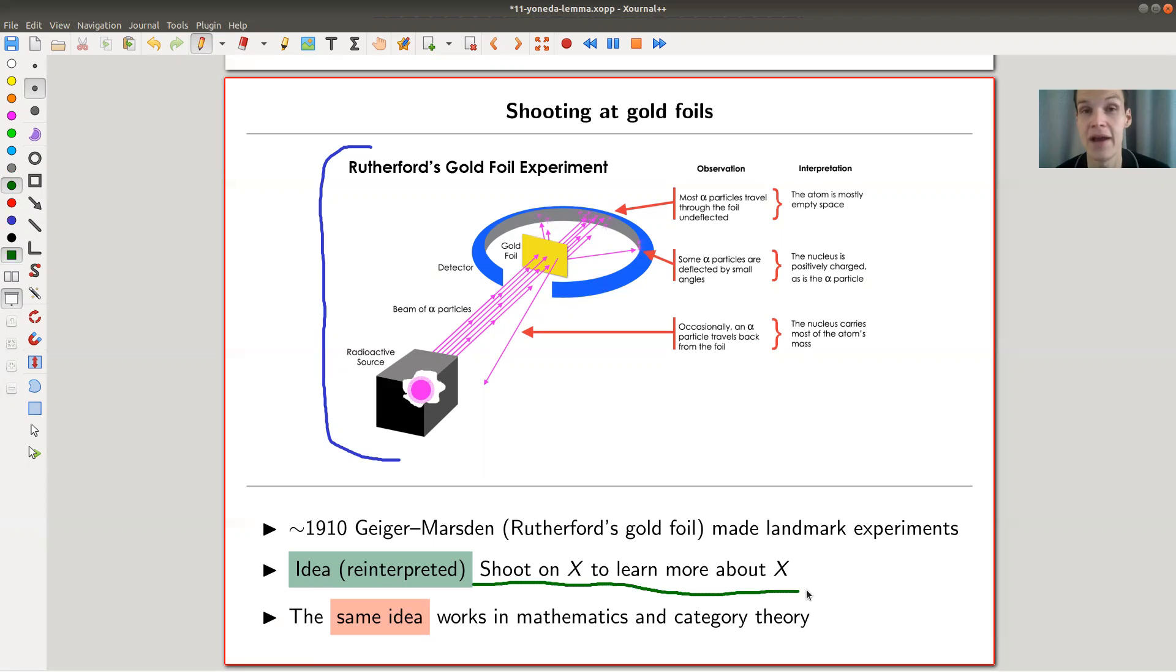But anyway, it's kind of the same idea. So you can study an object by throwing things at it, right? Kind of that's the reinterpreted idea here. So I want to learn about x, of course, and I want to do it by shooting at it, whatever shooting means. And the same idea works actually in mathematics in general, and in category theory in particular. So you can study an object by not really looking at the object, but by rather looking at, let's say, morphisms to that object or from that object, something like that. And I like to think about the Yoneda lemma as being the gold foil experiment of category theory.